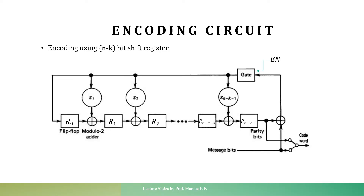The encoding circuit for a binary cyclic code looks like this, which is made up of n-k number of flip-flops which forms a shift register, and a mandatory adder along with many modulo-2 adders. This encoding circuit takes the message as the input and produces the code word as the output. The length of the message bits will be k bits and the length of the code word will be n bits, where n is always greater than k, which includes the remainder polynomial — the remainder bits appended with the message bits — and an AND gate.